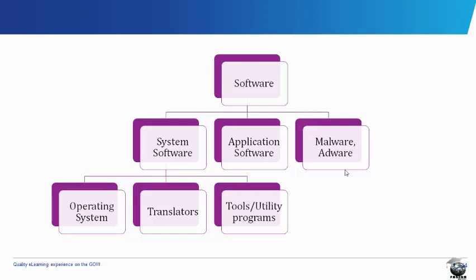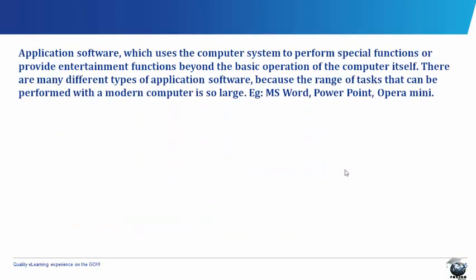Let us now look at some of them. Application software uses the computer system to perform special functions, or provide entertainment, or other functions beyond the basic operation of the computer itself. There are many different types of application software, because the range of tasks that can be performed with a modern computer is so large.